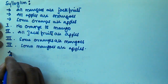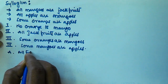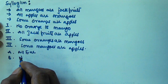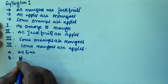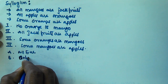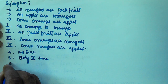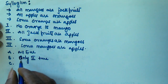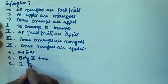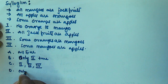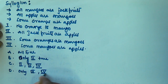The options given are: A is all true. B is only two is true. C is two, three and four conclusions are true. D is only three and four is true. And option E is none of these.